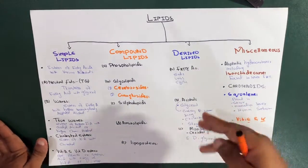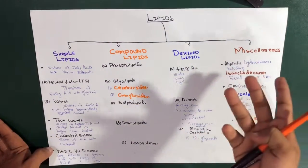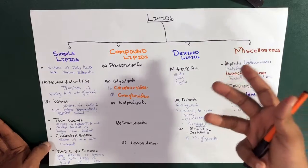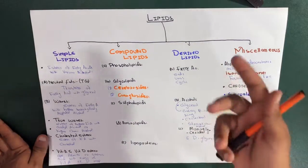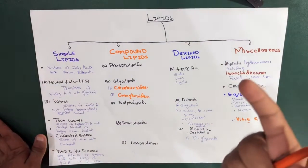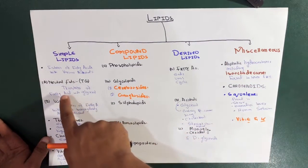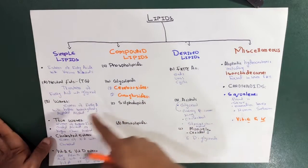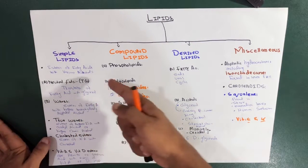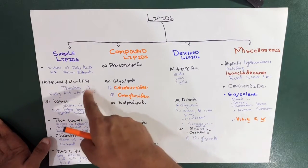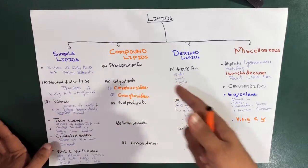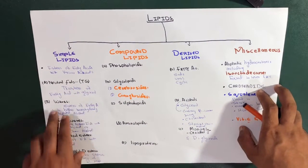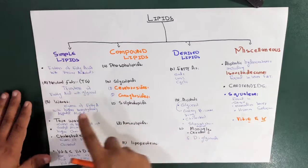Neutral fats are also called triglycerides — commonly referred to as triglycerides, found in many places including membranes. This is actually the triester of fatty acid with glycerol, which is why we call it triglycerol or simply neutral fats.